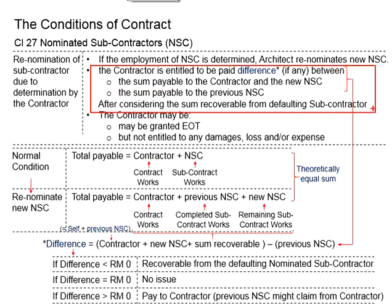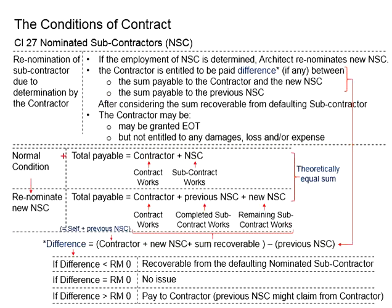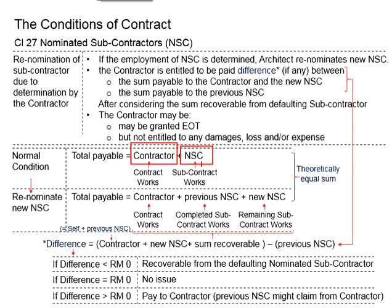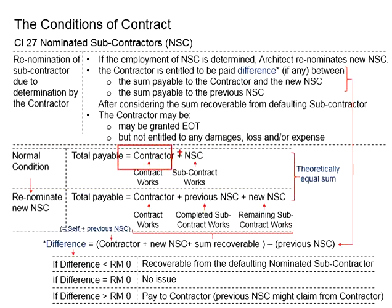To fully understand this, let us look at the diagram. This represents the normal circumstances. The amount payable by the employer shall be equal to the amount paid to the contractor plus the amount paid to the nominated subcontractor. The contractor is paid for the works under the contract, while the nominated subcontractor shall be paid for the subcontracting work done by him. Under normal circumstances, everything runs smoothly and everyone gets their parts.